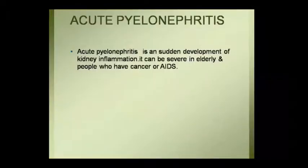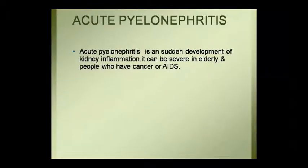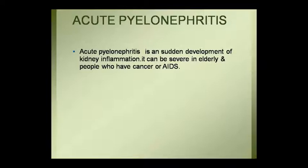Acute pyelonephritis is the sudden development of kidney inflammation. It can be severe and is seen in older people, as well as in those who have cancer or AIDS, making them more susceptible.